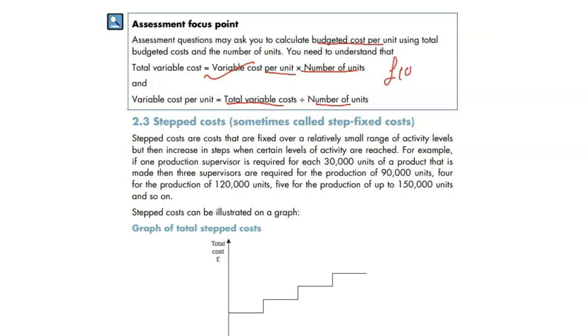They're talking about if the total cost is 1,000 pounds and you have produced 500 items, the variable cost per unit would be 2, not 22.